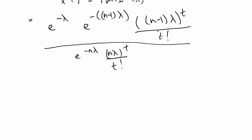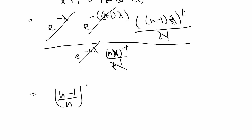Now we just simplify. The t factorials cancel out, and the lambda terms cancel. Distributing the exponent in the top part, the e to the negative lambda and e to the negative (n-1)lambda combine to give e to the negative n*lambda, which cancels with the denominator. We're left with (n-1)^t over n^t, which is (n-1)/n to the t. Since t equals the sufficient statistic, which is the sum of xi, we can plug that in for our Rao-Blackwell estimator.